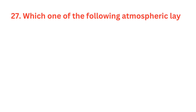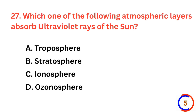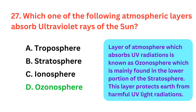Which one of the following atmospheric layers absorbs ultraviolet rays of the sun? The correct answer is option D, Ozonosphere.